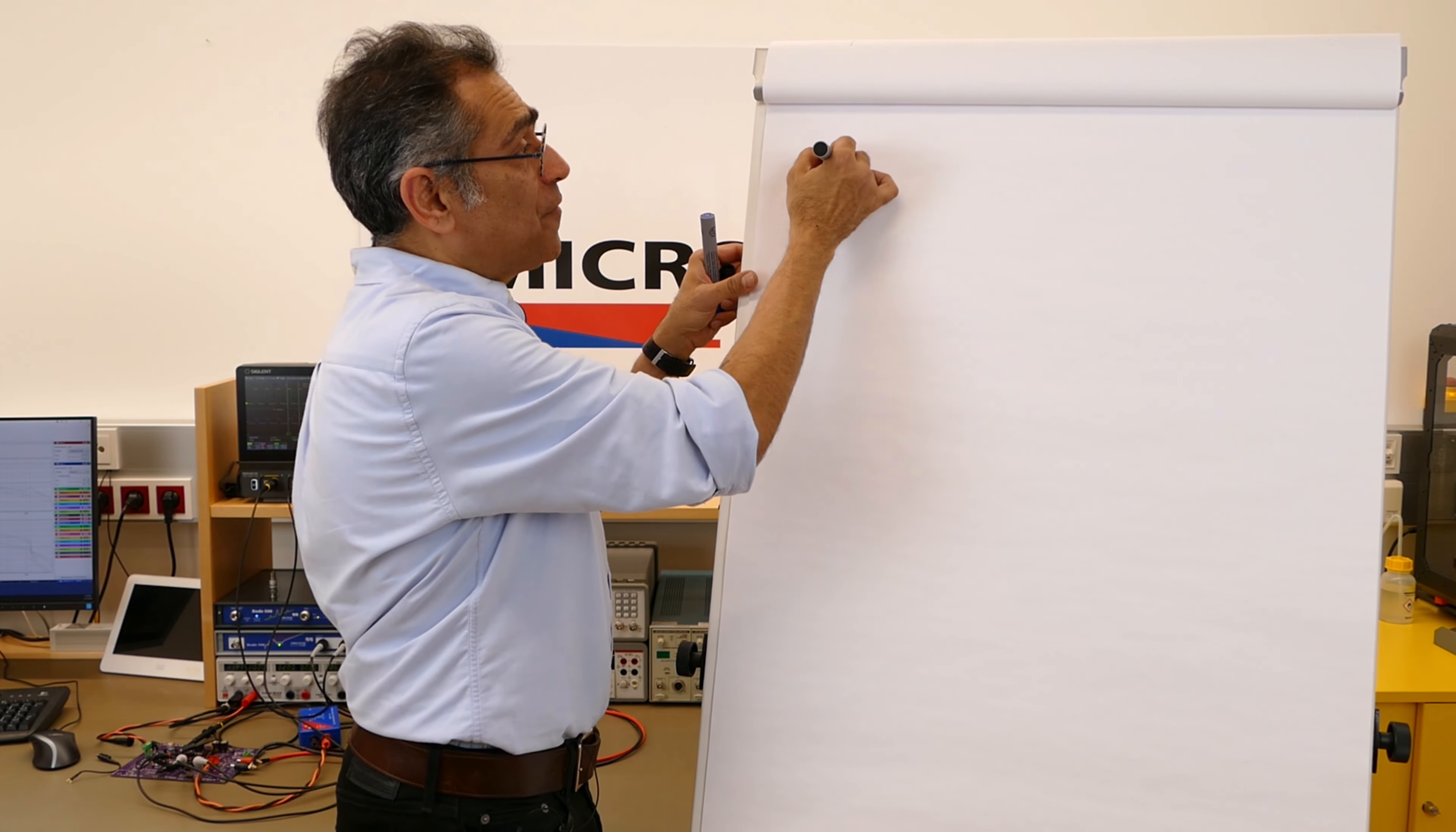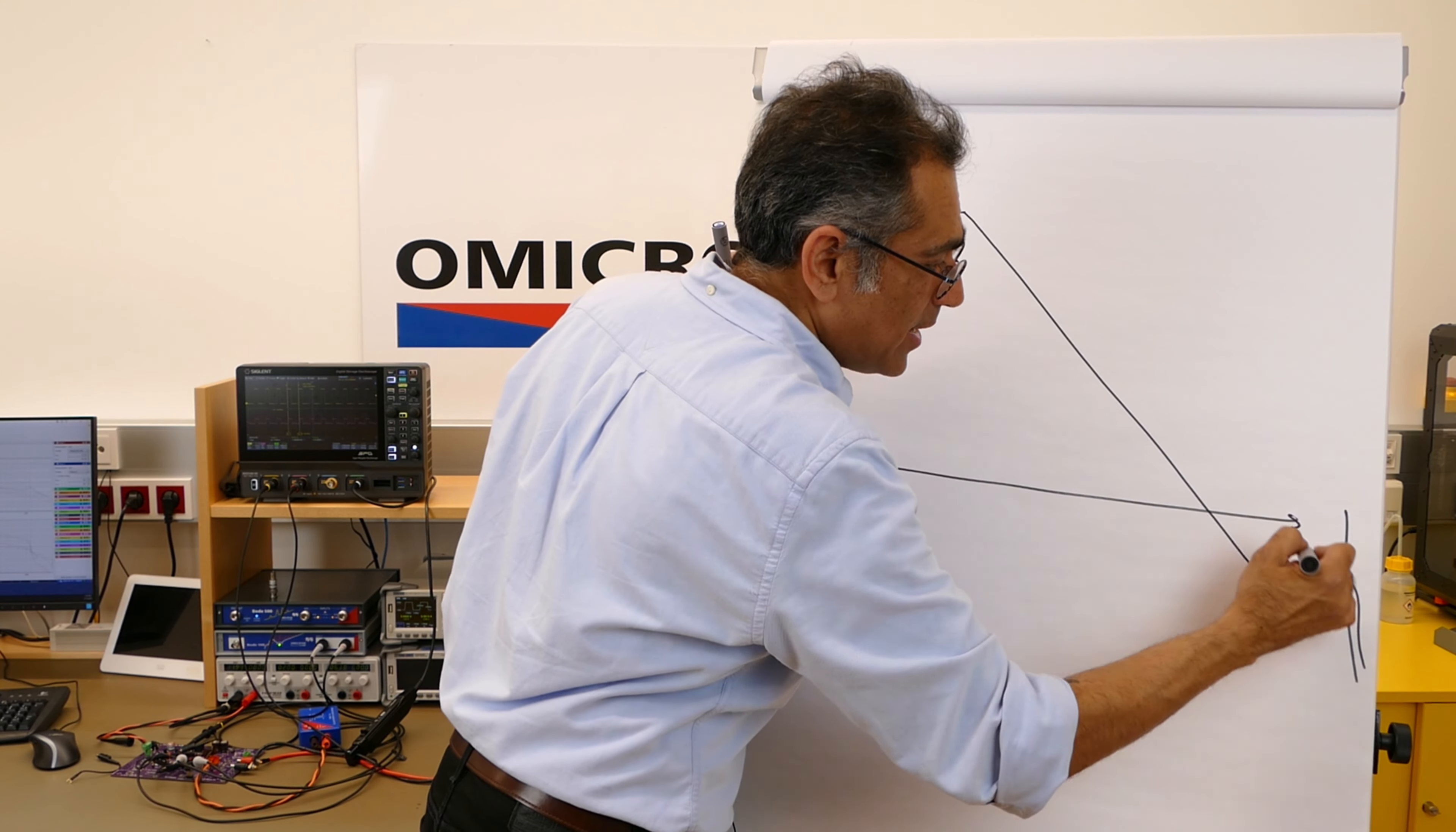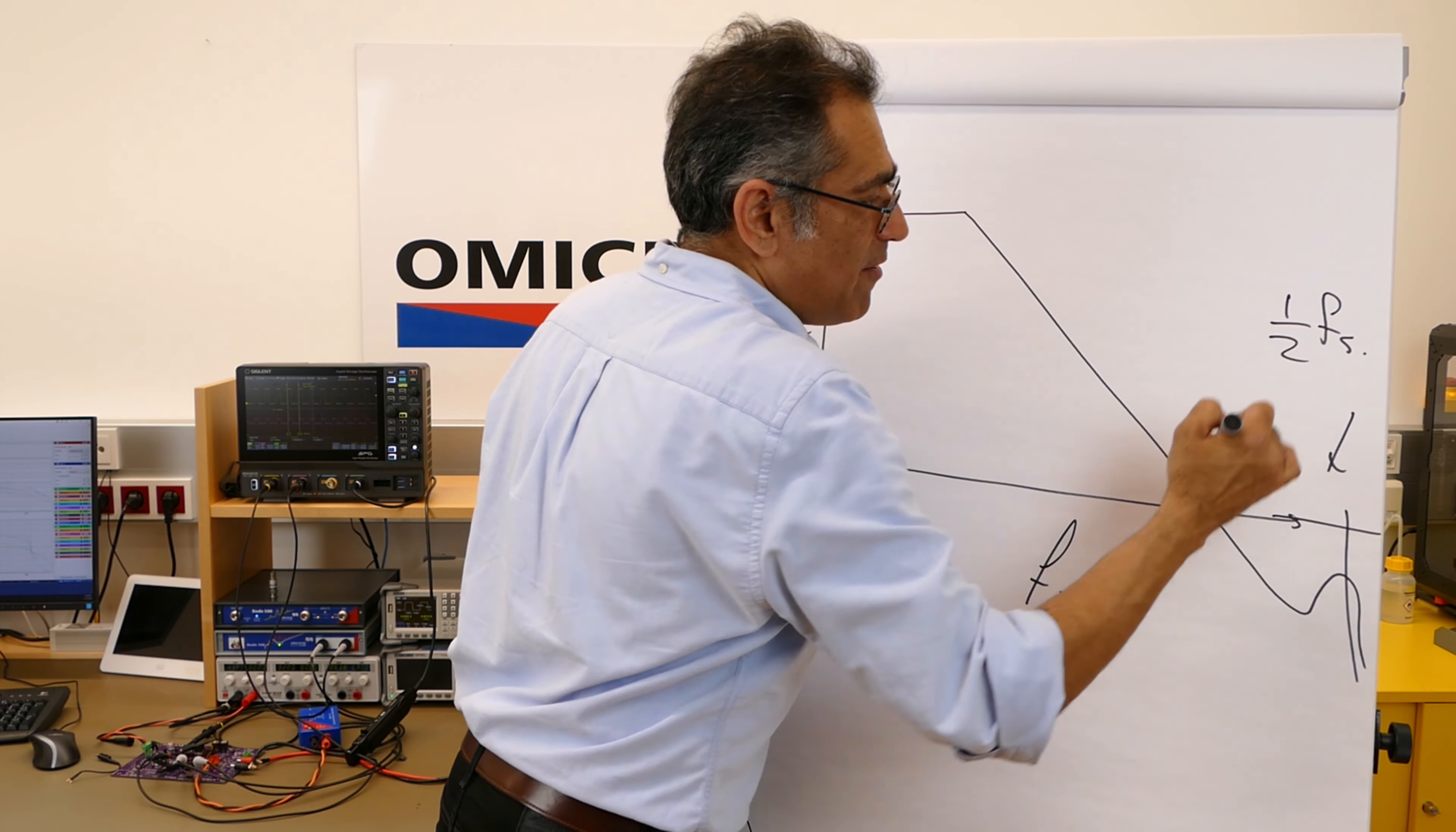But for now, the frequency domain response of a current mode plant will look something like this. So you start with some low frequency gain, then it goes down at a rate of 20 dB per decade, and then you have this resonance here at half the switching frequency.